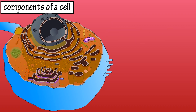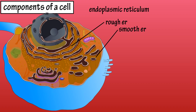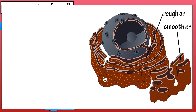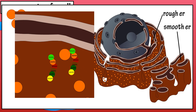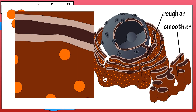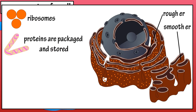The first organelle we're going to look at is the endoplasmic reticulum. There are two types: the rough ER and smooth ER. The rough ER extends out from the nucleus and has ribosomes attached to its membrane, giving it a rough appearance. These ribosomes produce proteins or polypeptide chains, which are either embedded into the membrane of the ER or enter the lumen or cavity of the rough ER, where they are modified, packaged, and stored until they are released.